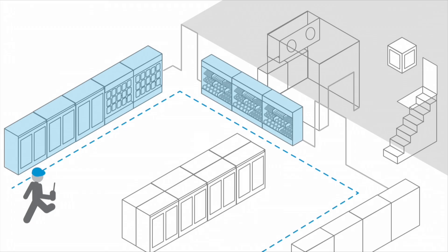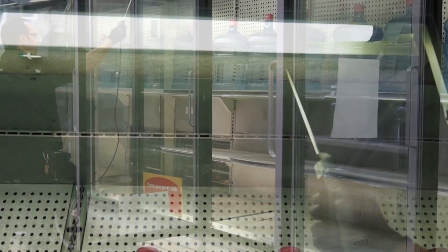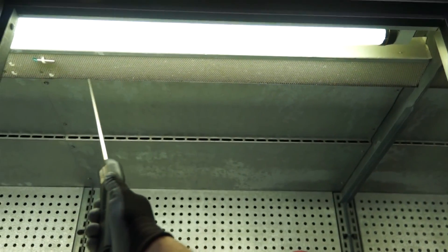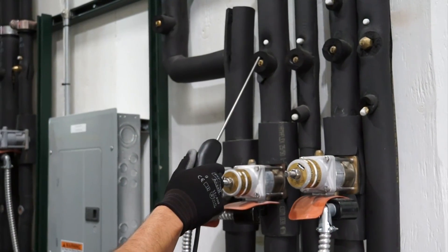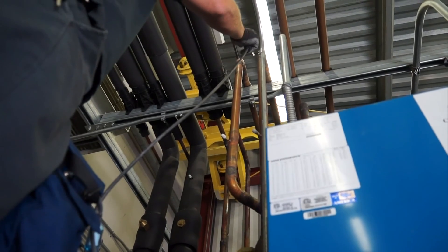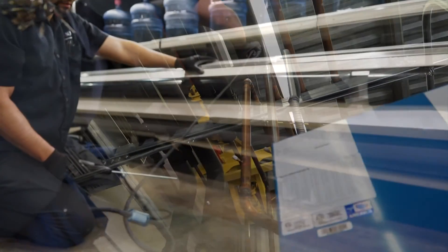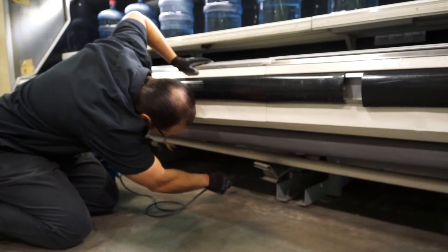Start at one end of the store and check all the cases. Run the leak detector slowly along the honeycomb and check the side of each case where the valves are located. Overhead piping above a T-bar ceiling can be checked at the drops of the display cases and at a midpoint by removing a tile and checking if refrigerant will fall into the T-bar and follow air movement. Exposed overhead piping can be checked by walking the path of the piping with a leak detector. Underground piping needs to be checked at both ends where it penetrates the flooring.